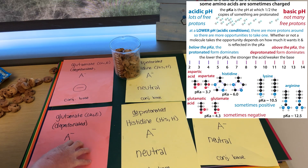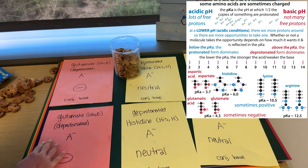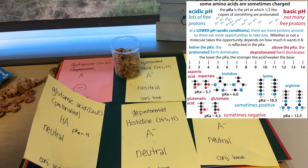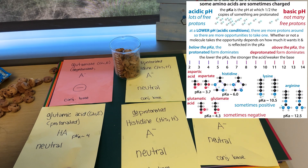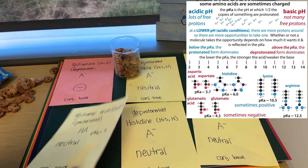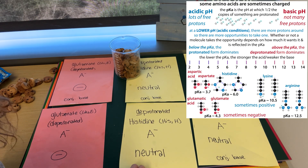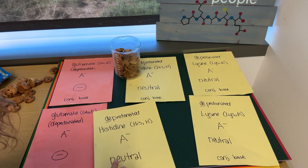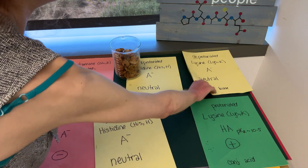The acidic ones, you're almost always going to find them in the negative form because their pKr's are going to be so much below the pH of our bodies. So, we'd have thousands of times fewer protons available than you need for even half of them to be protonated. Histidine is kind of a mixture of both. And lysine, you're almost always going to find it in the positively charged state.